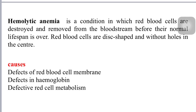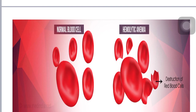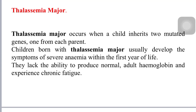Hemolytic anemia is a condition in which red blood cells are destroyed and removed from the bloodstream before their normal lifespan is over. Red blood cells are disc-shaped and without holes in the center. The causes include red blood cell membrane defects, defects in hemoglobin, and defects in red blood cell metabolism. Here you can see the normal blood cell compared to the hemolytic blood cell, showing destruction of RBCs.